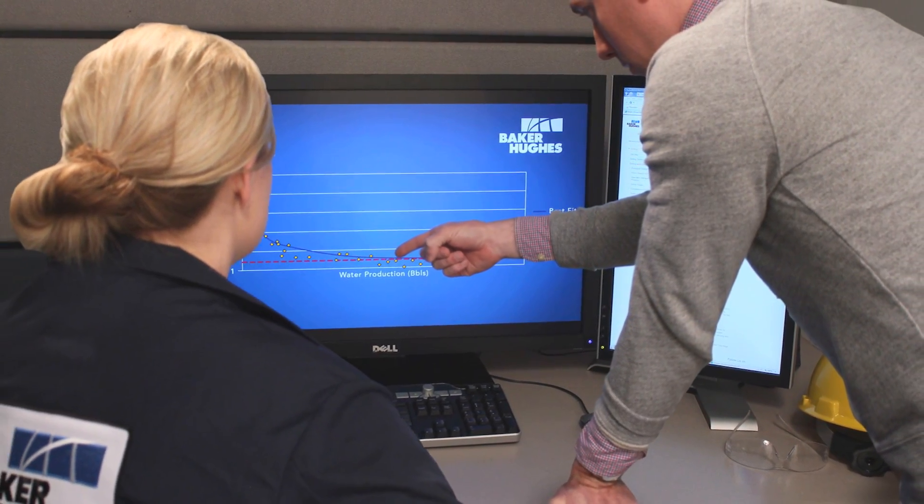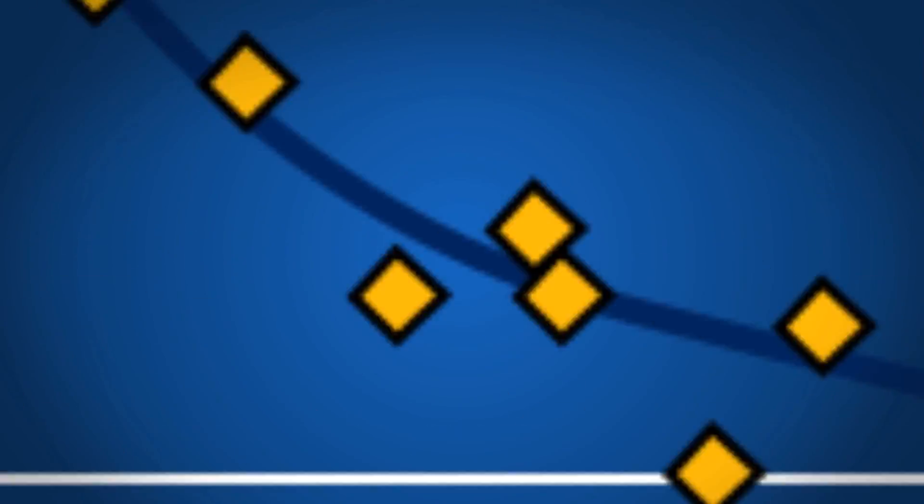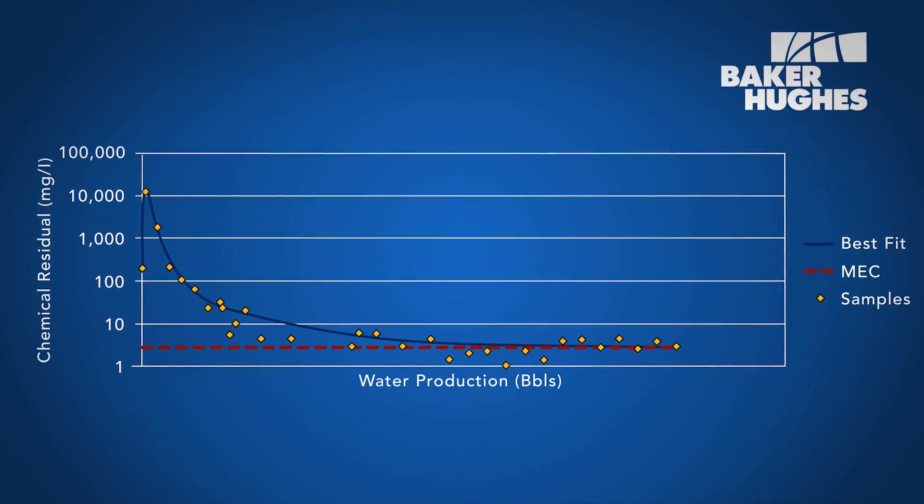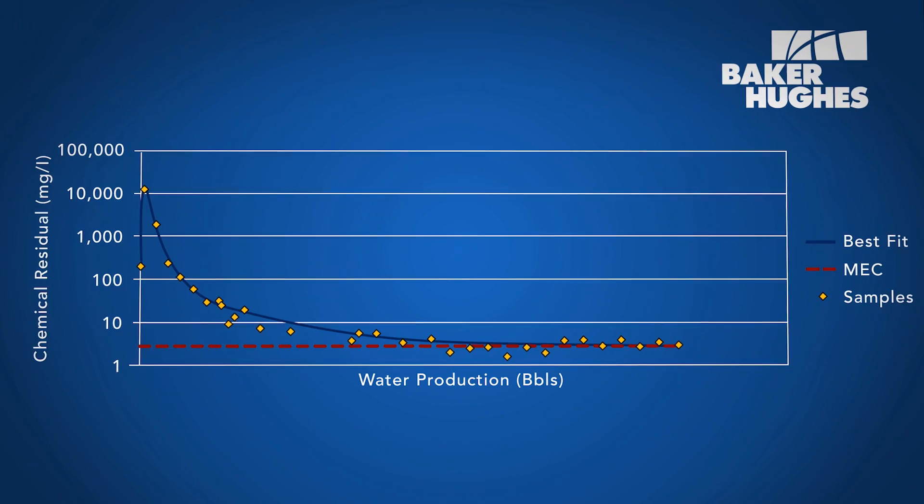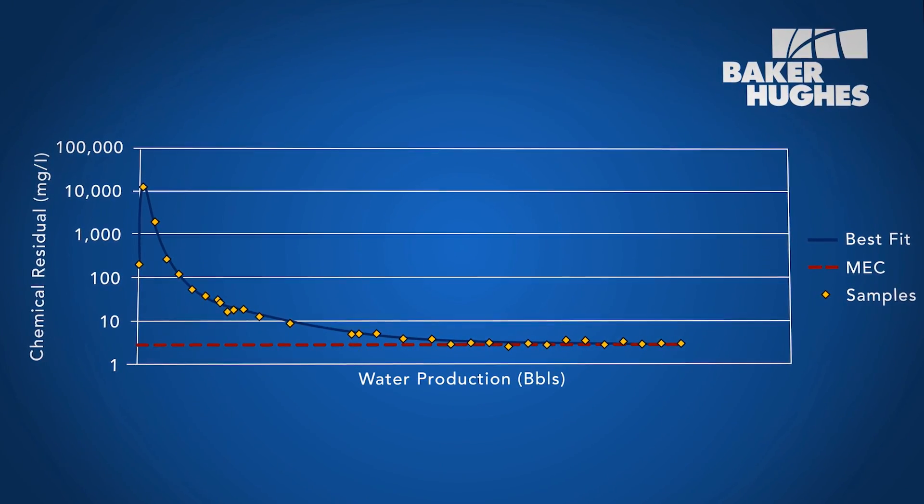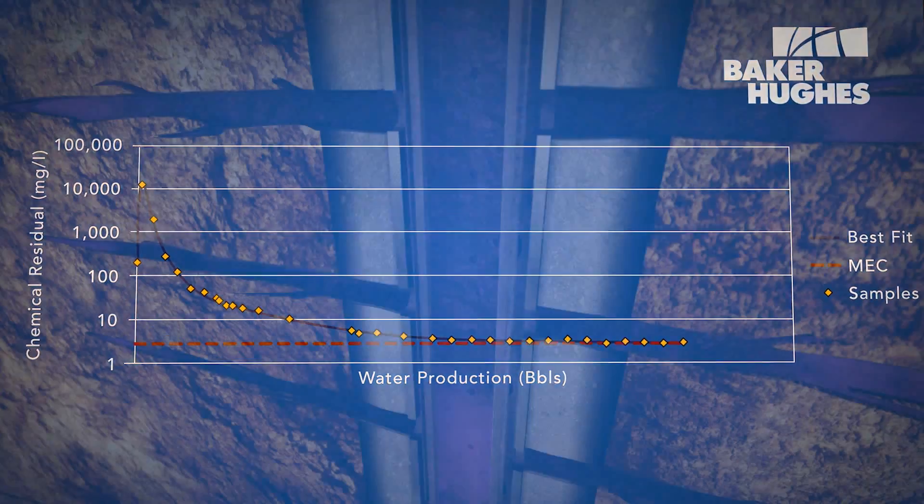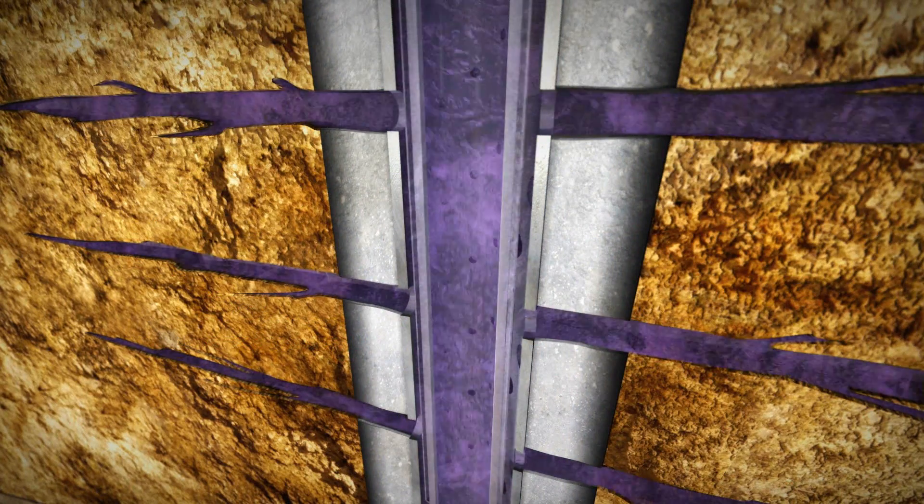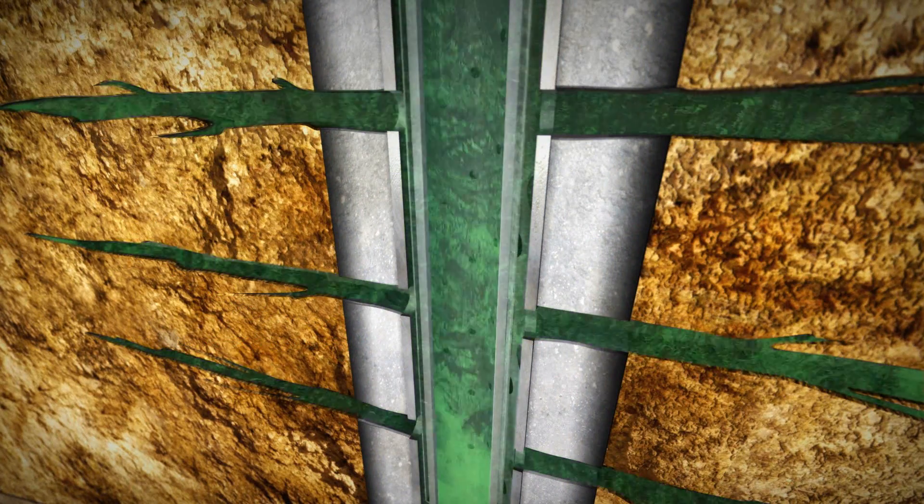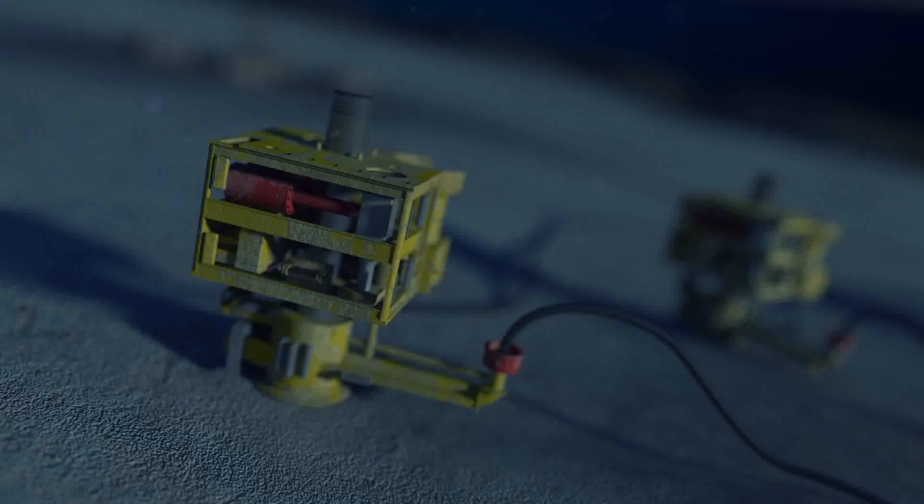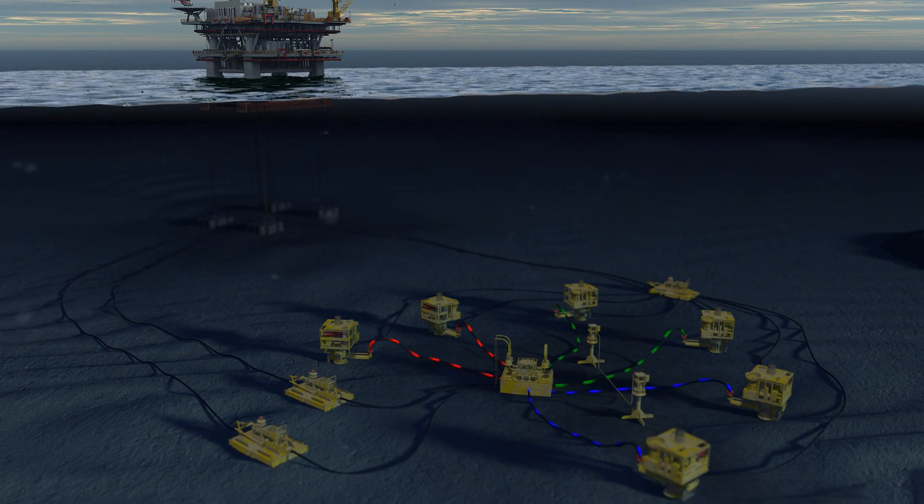Baker Hughes management systems deliver optimized designs to prolong treatments and reduce application costs. Our tagged scale inhibitors provide enhanced monitoring capabilities to improve on future squeezes, to reduce the risk of a well becoming unprotected, and to sample from complex production systems.